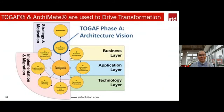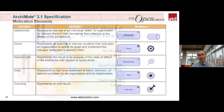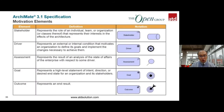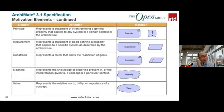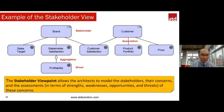Let's focus on Phase A — Architecture Vision — in the ArchiMate 3.1 context. There is a set of building blocks you can use: driver, assessment, goal, outcome, principle, requirement, constraint, meaning, and value. For strategy elements, ArchiMate allows you to model resources, capability, value stream, and course of action. This is the example of the stakeholder view of Akisuren — the board as senior management wants to have a clear picture going forward.